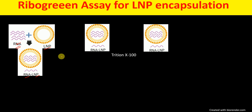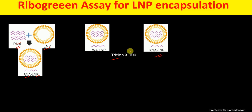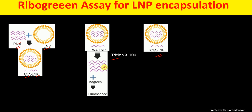To measure the concentration of encapsulated RNA, we take two samples. One sample of our synthesized lipid nanoparticle we treat with Triton X-100, because we want to break down the lipid nanoparticle so that all the RNA is released. In the other sample, we do not treat with Triton X-100 and leave the lipid nanoparticle intact. So we have one sample with Triton X-100 treatment and one without.